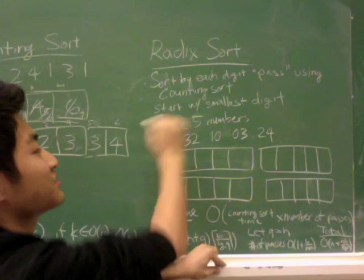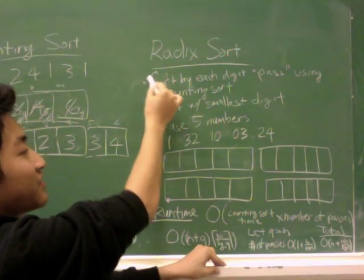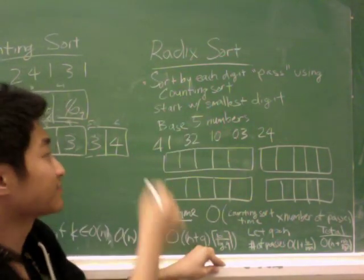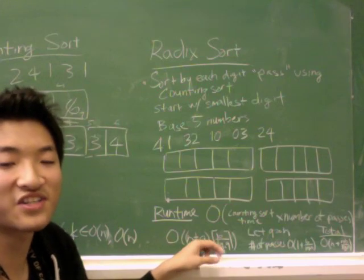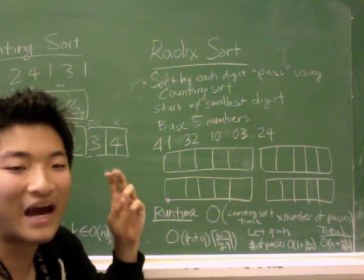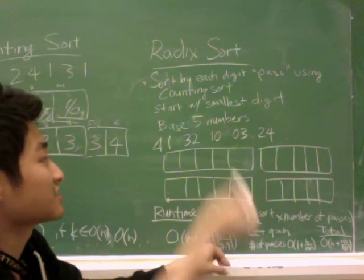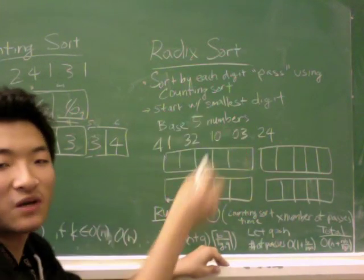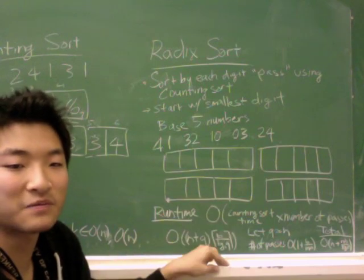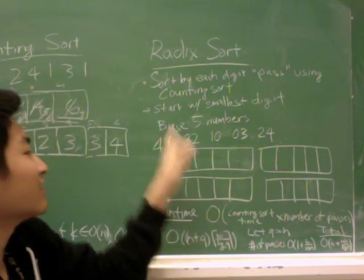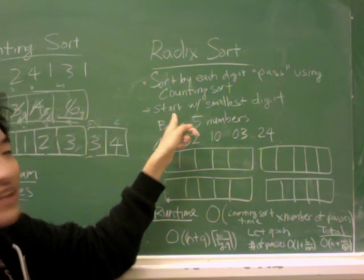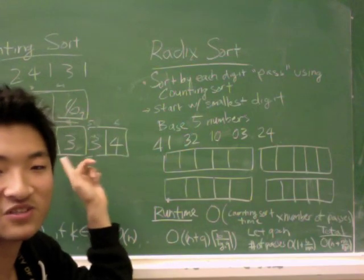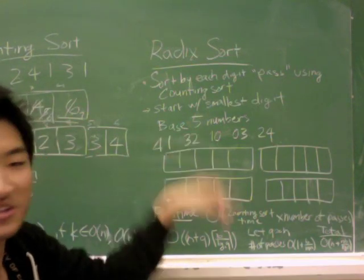And so what you do is you sort each digit. And the process of sorting each digit using counting sort is a pass. So radix sort does a lot of passes over the array. And you start with the least significant digit, the smallest one, and then you build up to the most significant digit. And you'll see that radix sort uses the stability of bucket sort and counting sort in order to do its job.